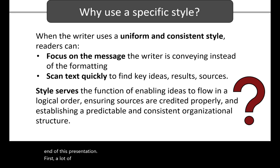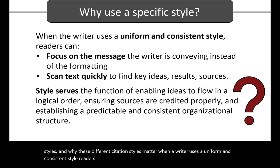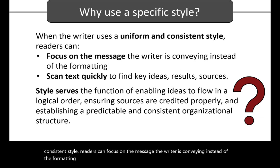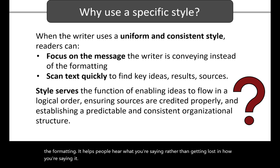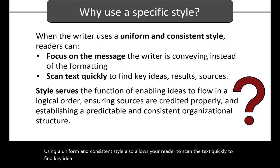A lot of students wonder why we have so many different academic writing styles and why these different citation styles matter. When a writer uses a uniform and consistent style, readers can focus on the message the writer is conveying instead of the formatting. It helps people hear what you're saying rather than getting lost in how you're saying it. Using a uniform and consistent style also allows your reader to scan the text quickly to find key ideas, results, and sources. This is helpful when doing research.